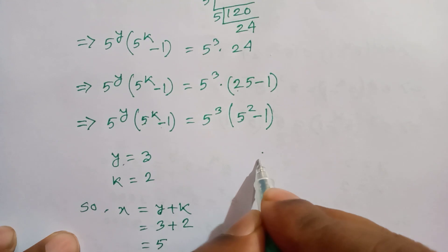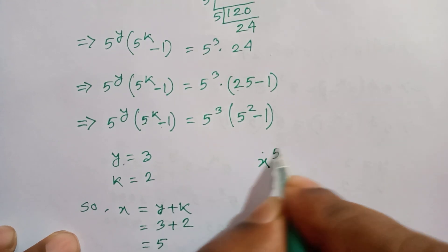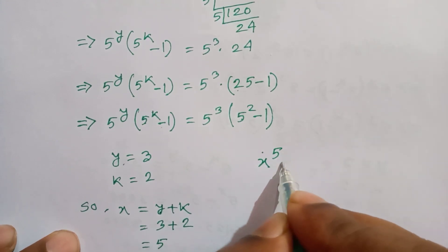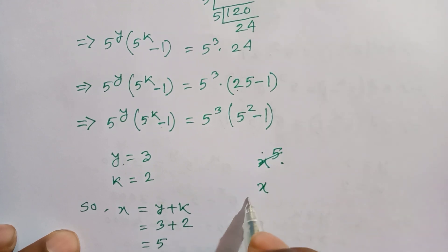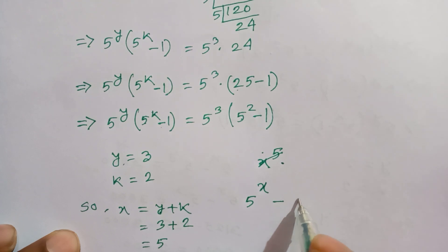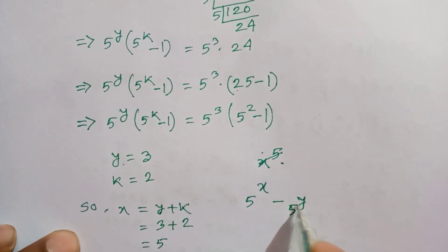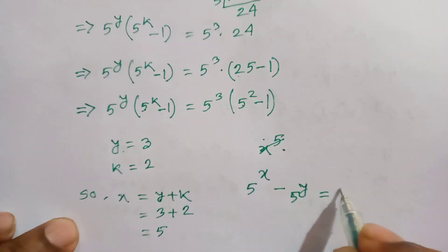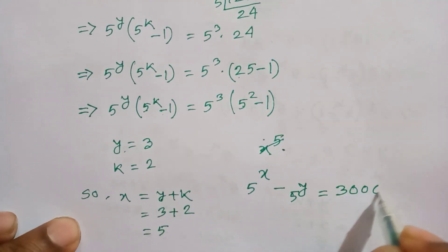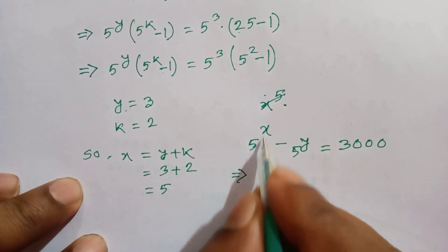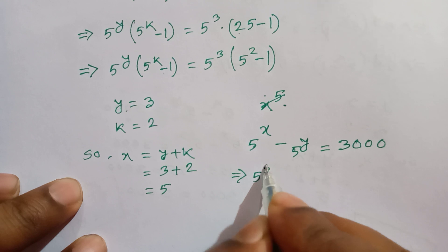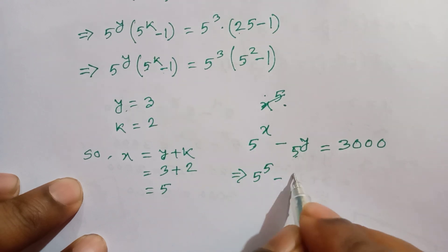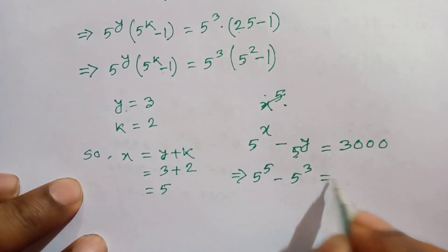Now we check: if y equals 3 and x equals 5, then 5 to the power x minus 5 to the power y equals 5 to the power 5 minus 5 cubed. That equals 3125 minus 125, which equals 3000. So the left side equals the right side.